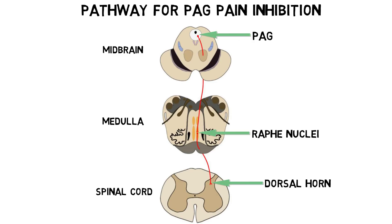The pathway may also be involved in analgesia that occurs as part of the placebo effect, or in other scenarios where we experience a capacity to control pain through top-down mechanisms. Additionally, the PAG is rich in opioid receptors and believed to play an important role in the analgesia elicited by opioid drugs.